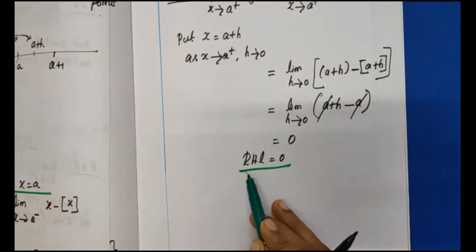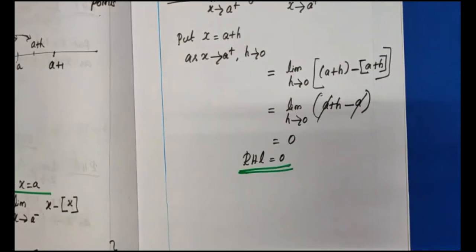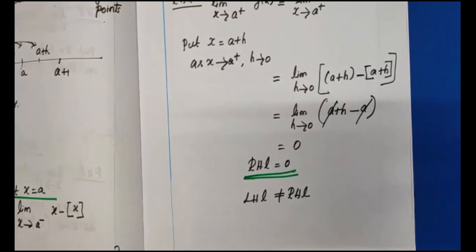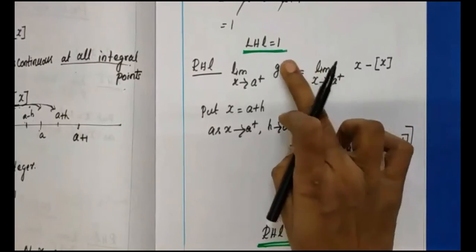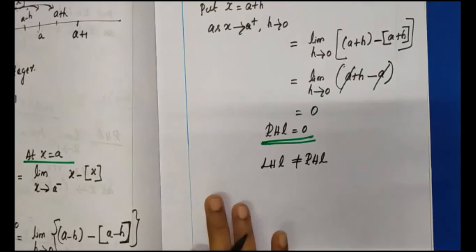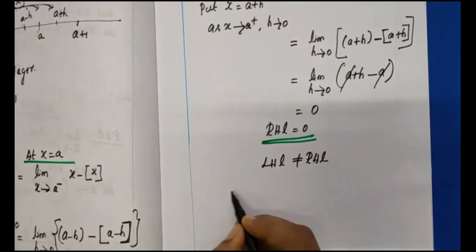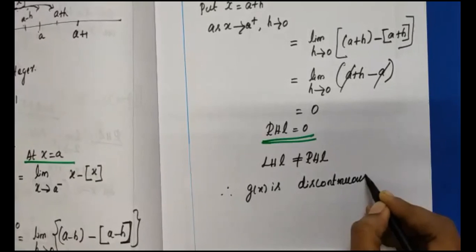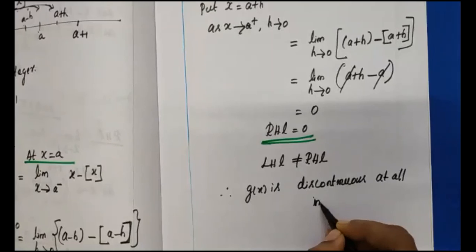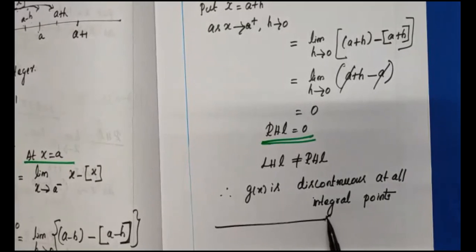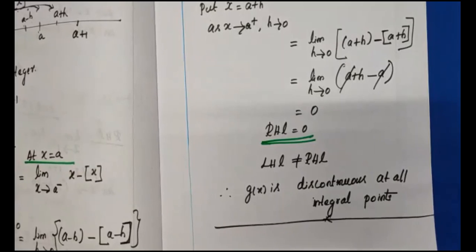Now we find g of a. The left-hand limit is 1 and the right-hand limit is 0. Since the left-hand limit is not equal to the right-hand limit, the function is discontinuous at the arbitrarily chosen integer point a. Therefore, g of x is discontinuous at all integral points.